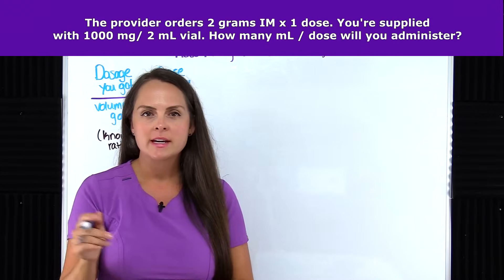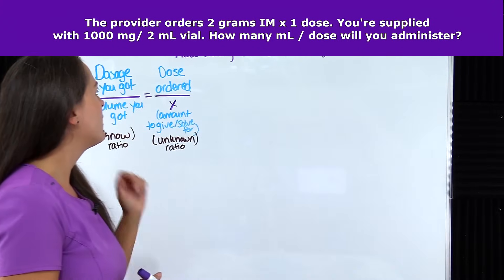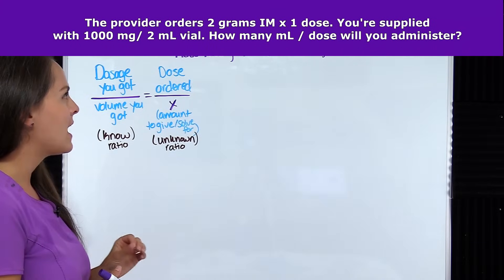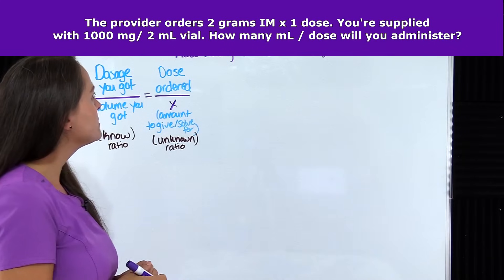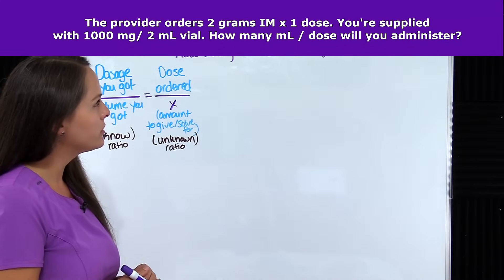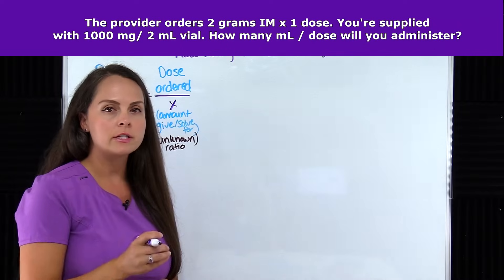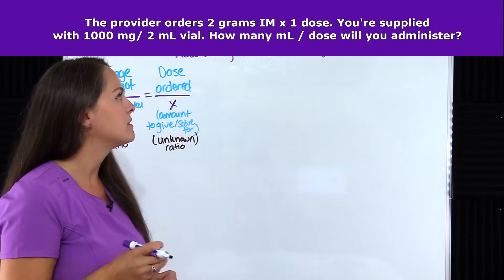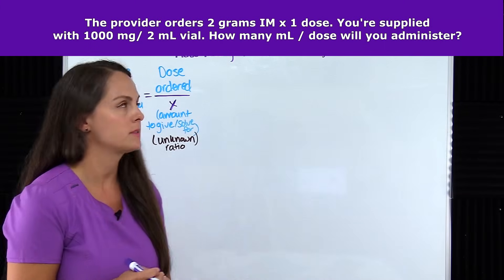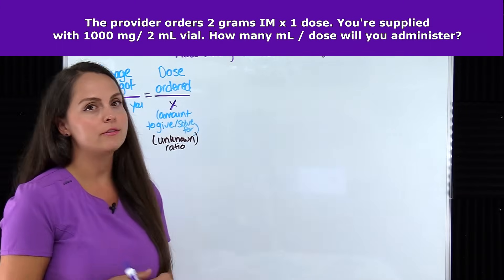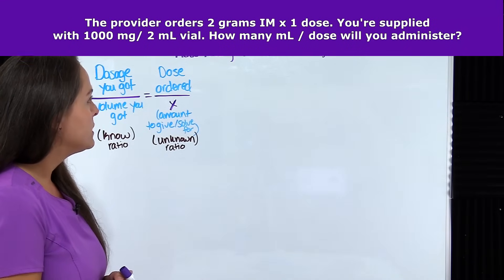Now let's do a problem where we have to take a little bit of an extra step. The provider orders 2 grams IM — intramuscularly — times one dose. You're supplied with 1,000 milligrams per 2mL vial, so for every 2mL you withdraw there's going to be 1,000 milligrams, but we need to give 2 grams. The units of measurement are different. How many milliliters per dose will you administer?